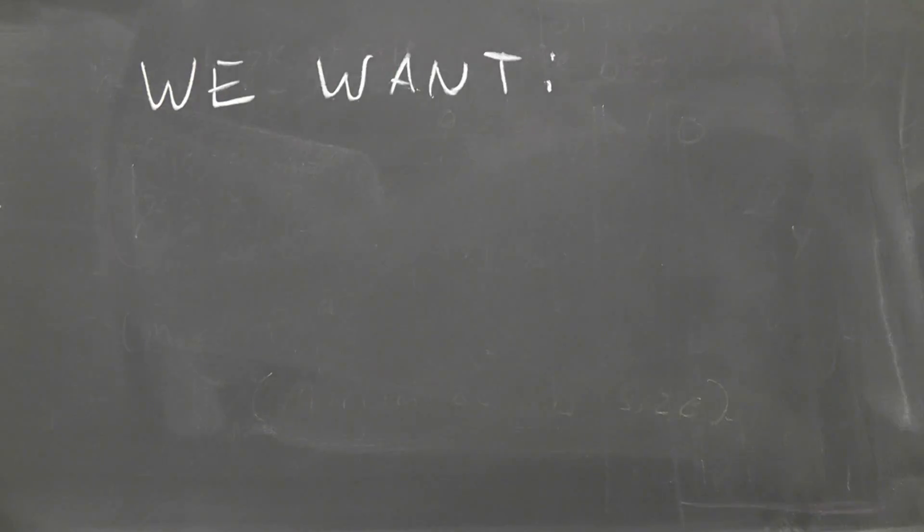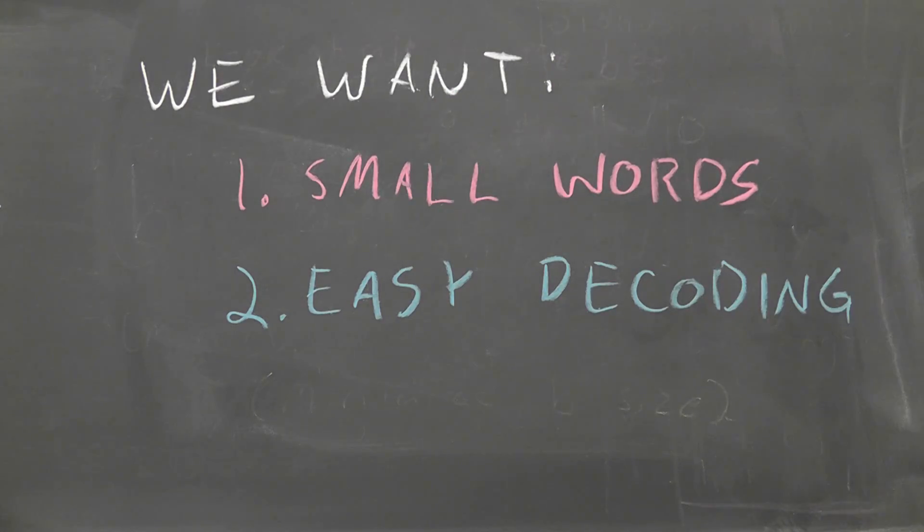So we need a method that guarantees the smallest encoded message but also ensures that we can decode our message super easily. Here was Huffman's idea.